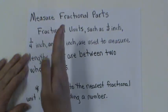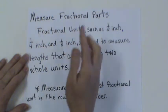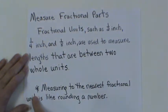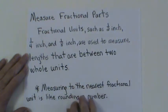So when you're measuring, if it doesn't land right on the 1, or right on the 2, or right on the 3, then you're going to be measuring with fractional units. Measuring to the nearest fractional unit is kind of like rounding a number. You have to find that smallest space in between the whole numbers.